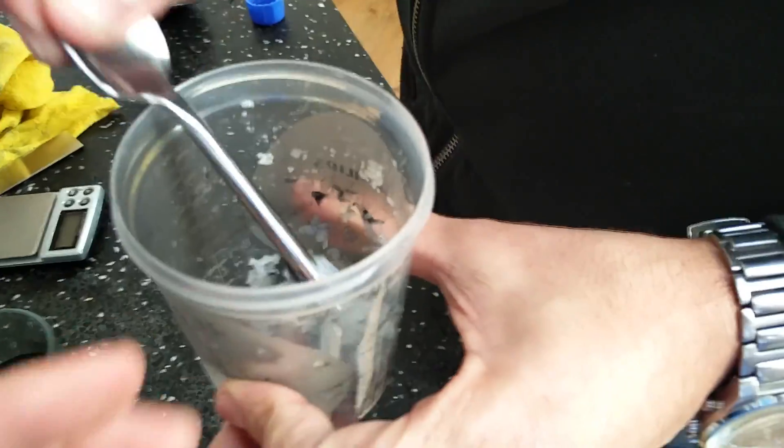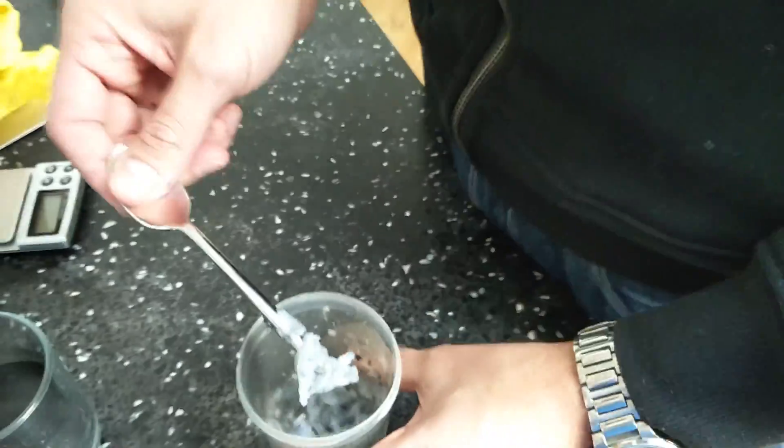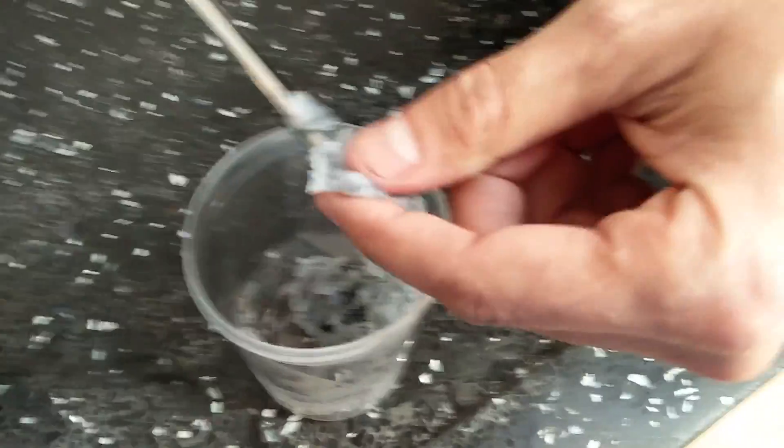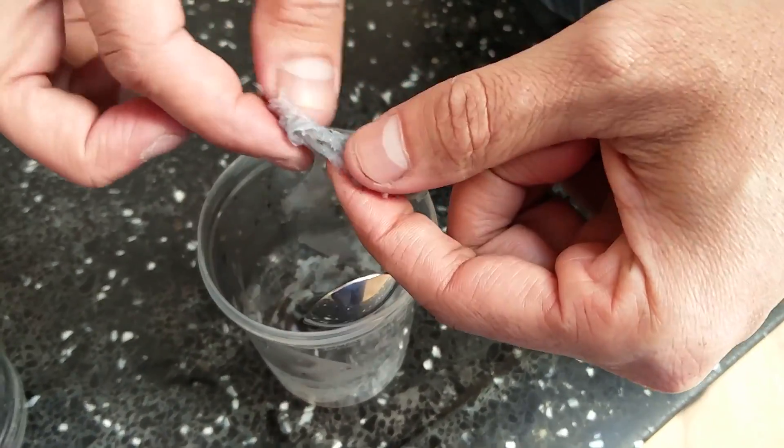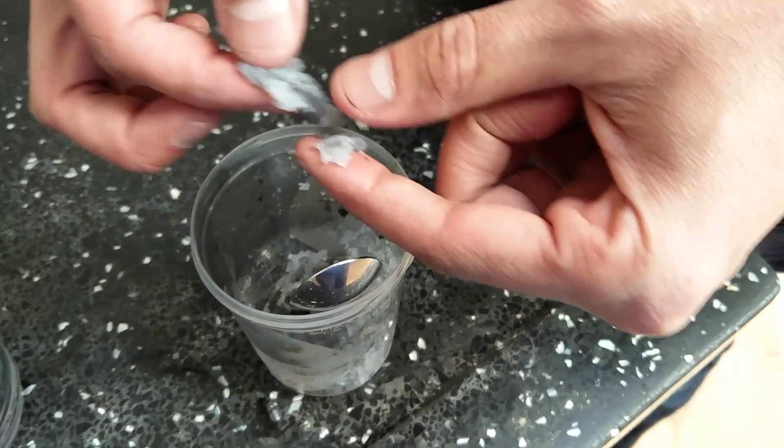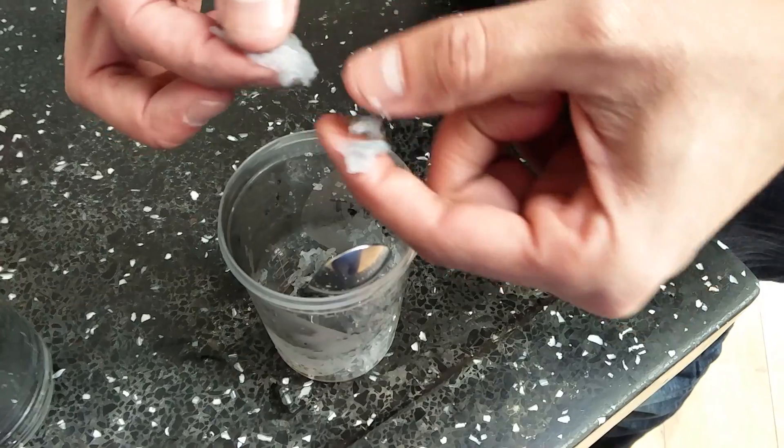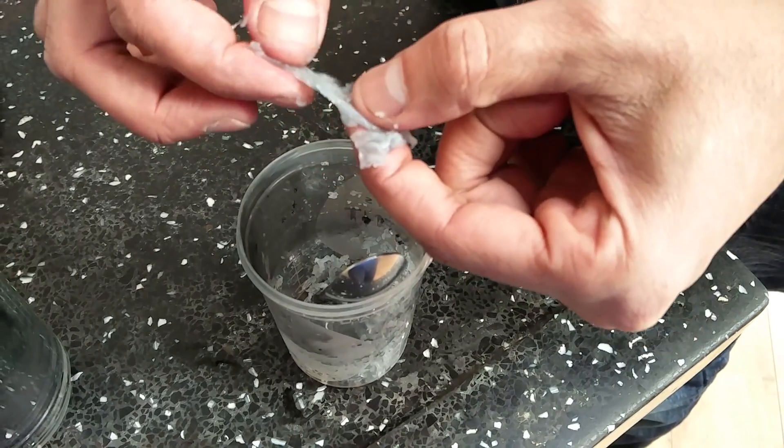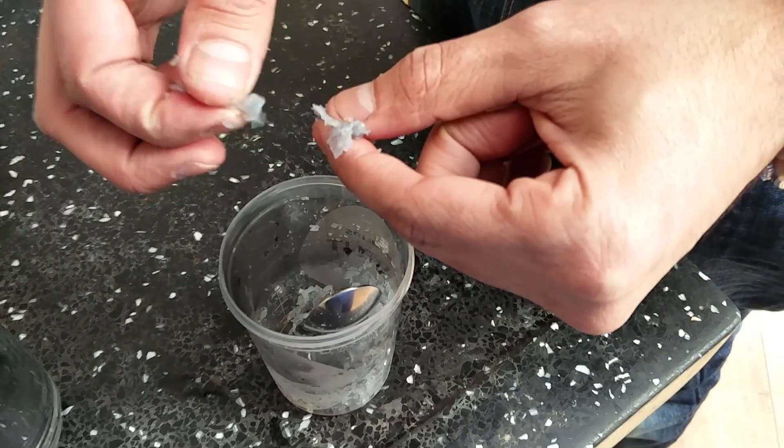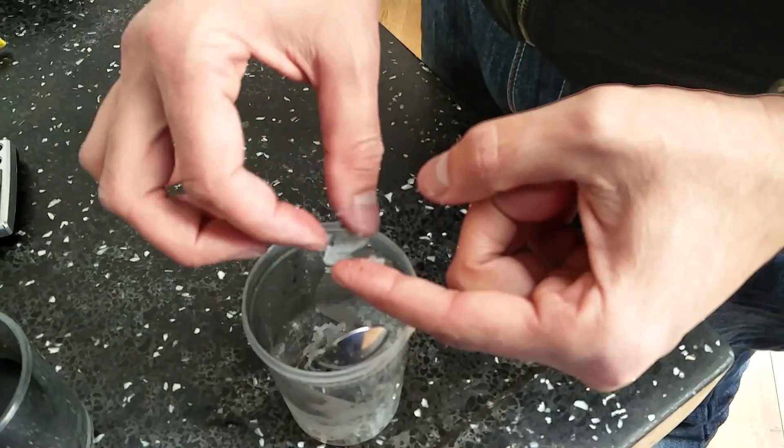Alright, okay. So for the viewers at home, this is the end result of basically wood glue with some acetone, and it actually feels like your classical glue that you had at kindergarten. You can make little boogers out of it.